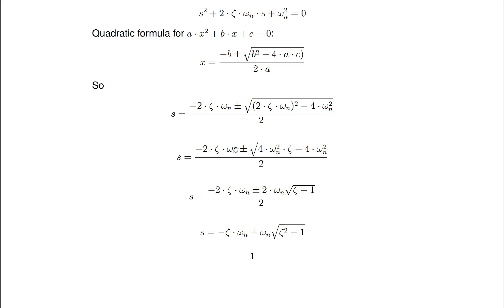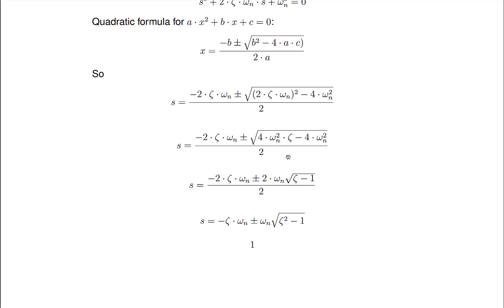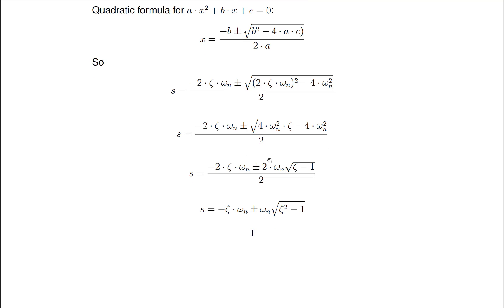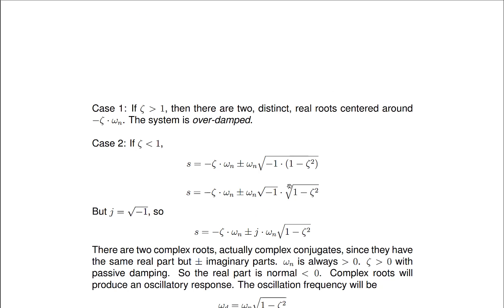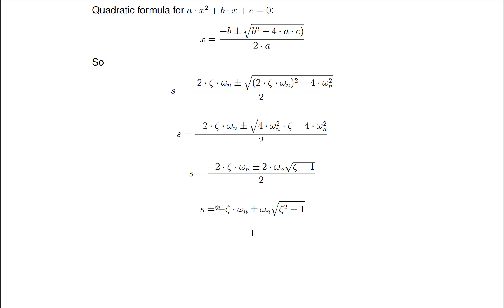So we do some manipulation there. We square that and then we do some factoring and we can pull 2 omega n outside of the square root. So we do that and I wind up with this equation here on the bottom. And then I can continue with that.